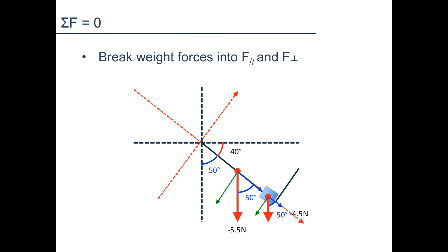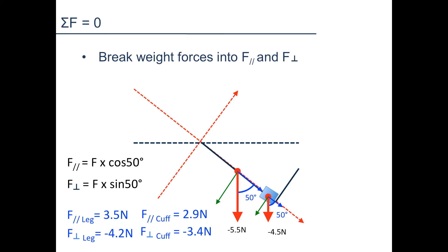Let's say the angle between the weight forces and leg segments is 50 degrees. With this information, we can calculate the parallel component of the weight force of the leg by multiplying the weight of the leg and foot by cosine of 50 degrees. The perpendicular component can be calculated by multiplying the weight by sine of 50 degrees. If the weight of the leg and foot is negative 5.5 newtons, the parallel component will be 3.5 newtons and the perpendicular component will be 4.2 newtons. The components of the cuff weight can be calculated similarly to be 2.9 newtons and negative 3.4 newtons.